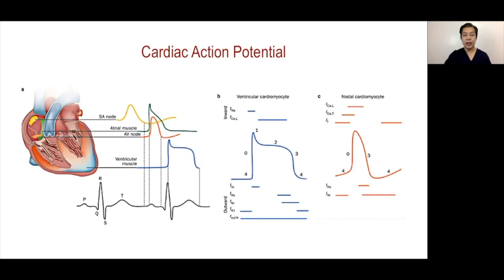The repolarization of the atrial cardiac myocytes is too small to be detected by the surface ECG, which is why the PR segment is isoelectric.